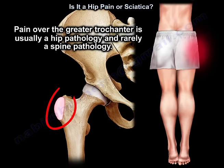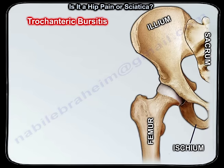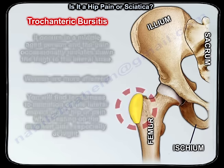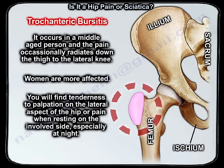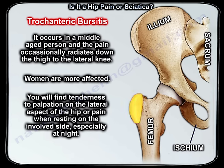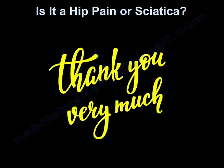Pain over the greater trochanter is usually a hip pathology and rarely a spine pathology. Trochanteric bursitis occurs in a middle-aged person and occasionally radiates down the thigh to the lateral knee. Women are more affected. You find tenderness to palpation on the lateral aspect of the hip, or pain when resting on the involved side, especially at night. Thank you very much, I hope that was helpful.